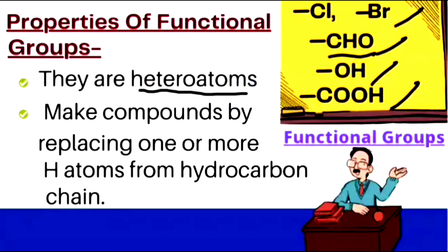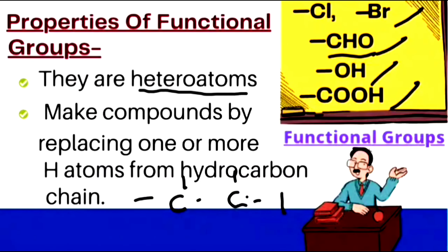Functional groups make compounds by replacing one or more hydrogen atoms from a hydrocarbon chain. In the hydrocarbon chain, the functional group replaces a hydrogen atom — or any atom attached to carbon — and attaches itself, forming a new organic compound.